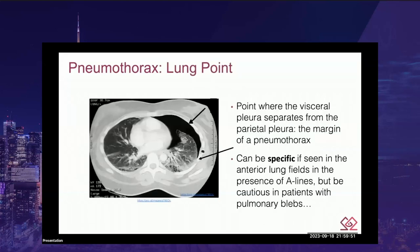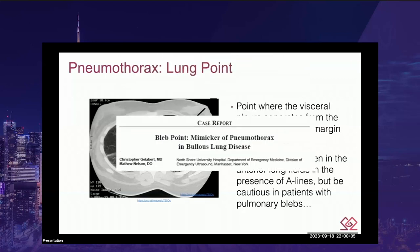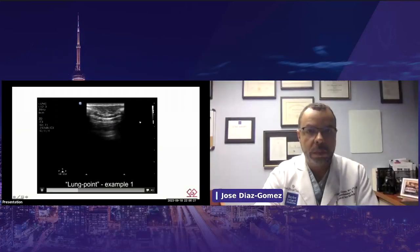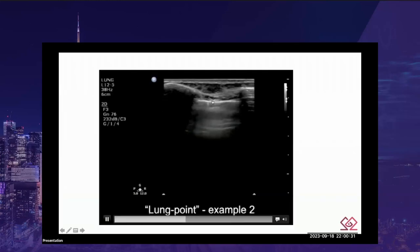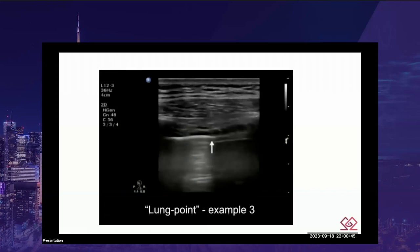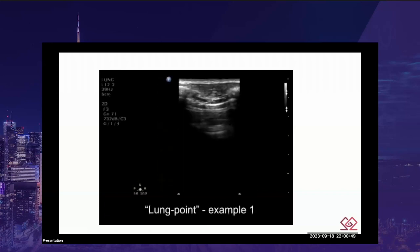A lung point is that inflection point where the visceral and parietal pleura separate from each other — this is the margin of pneumothorax. It can be very specific when seen in the anterior lung fields in the presence of A-lines. But be cautious in patients with pulmonary blebs, as they have been known to mimic pneumothorax by causing a lung point. When it's seen in the anterior lung fields, in the absence of pulmonary blebs, it is pathognomonic for a pneumothorax.